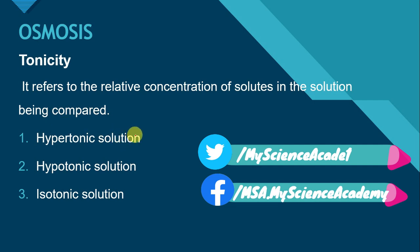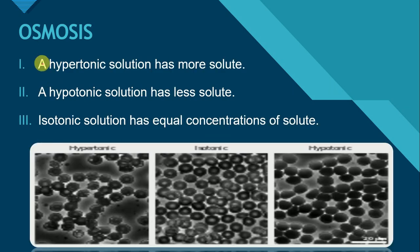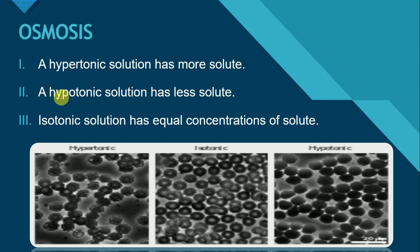Yahan hum tonicity ko under three headings discuss karenge: hypertonic solution, hypotonic solution, and isotonic solution. A hypertonic solution has more solute — hyper means more and tonic means solute. So hypertonic solution aisa solution hooga jis mein solute ki concentration zayidha hooghi. A hypotonic solution has less solute — hypo means less and tonic means solute. So hypotonic solution aisa solution hooga jis mein solute ki concentration less hooghi.